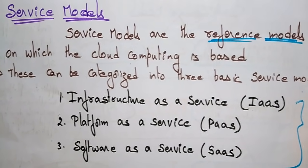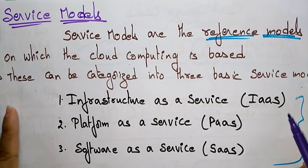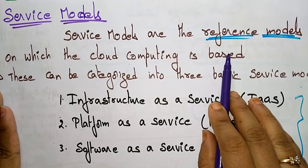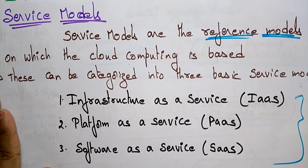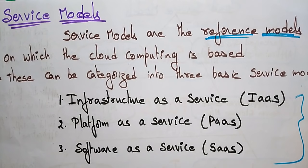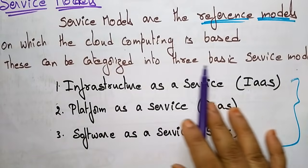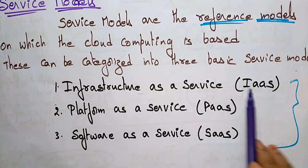Coming to the next topic in cloud computing: service models. In the previous videos I explained about the deployment models — the public cloud, private cloud, hybrid cloud, and community cloud. Coming to the service models, these are the reference models on which cloud computing is based. Cloud computing is completely based on these service models, and with their help they provide services to customers. These can be categorized into three basic service models: Infrastructure as a Service, Platform as a Service, and Software as a Service.